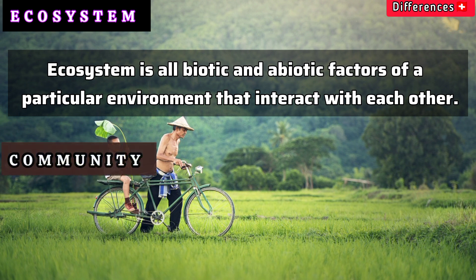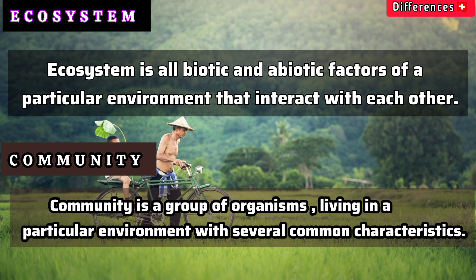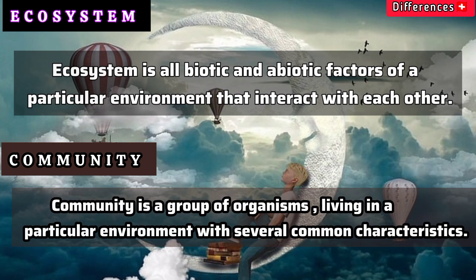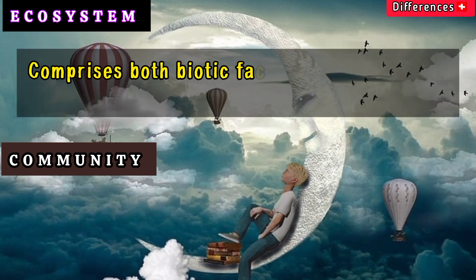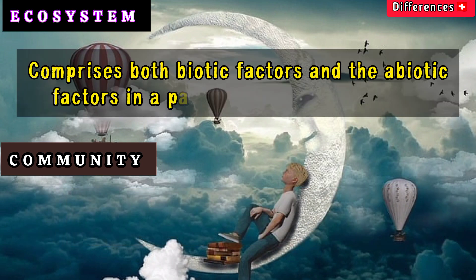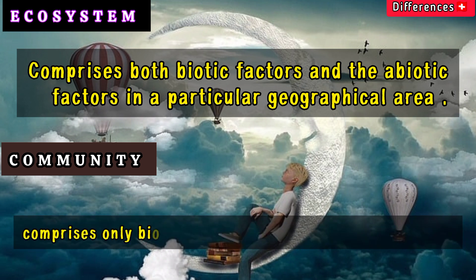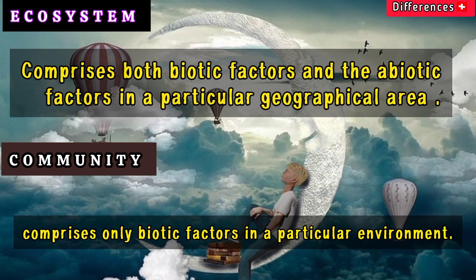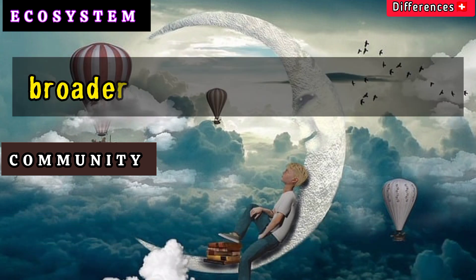A community is a group of organisms living in a particular environment with several common characteristics, comprising only biotic factors. An ecosystem, by contrast, comprises both biotic and abiotic factors in a particular geographical area.